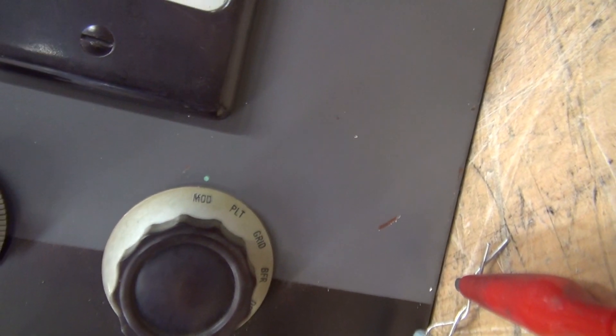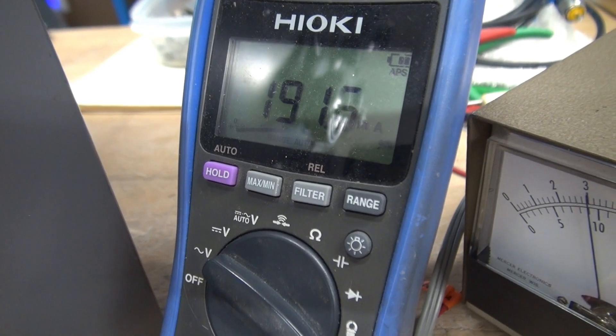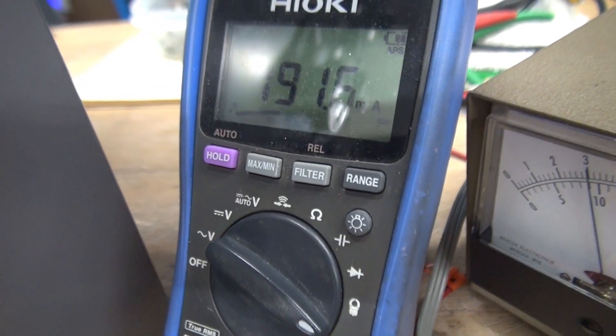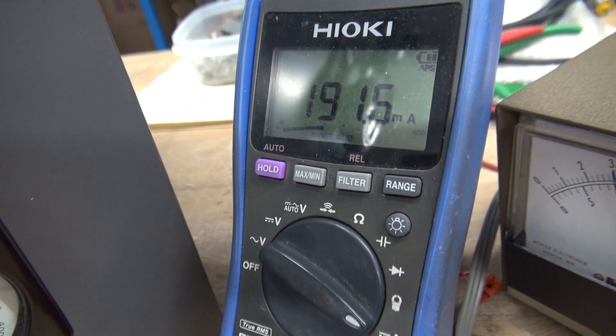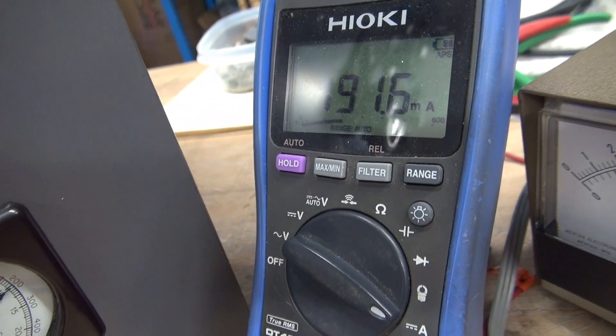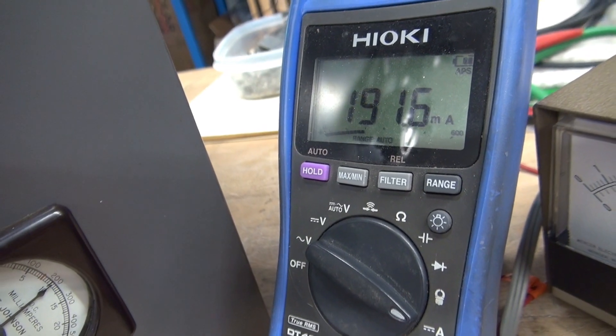I'm going to take this up to 200. Compare it. Almost 192 mils. So there is some inaccuracy on the modulation current shunt.